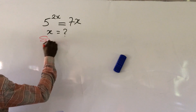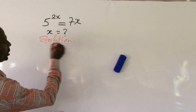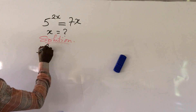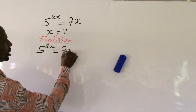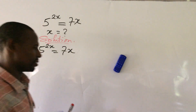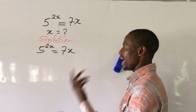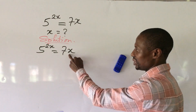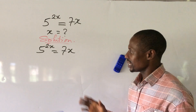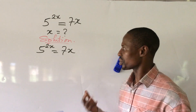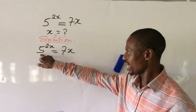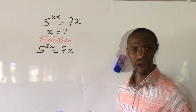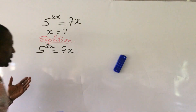Let's pull down our question and take the solution. The first step: we have 5 to the power of 2x equal to 7x. If you look at this challenge, the x we're looking for is at the exponent here and also at the base here. There is a simple logic we can use to solve this. Supposing both numbers were even numbers, but since they involve prime numbers, we need to navigate this differently.